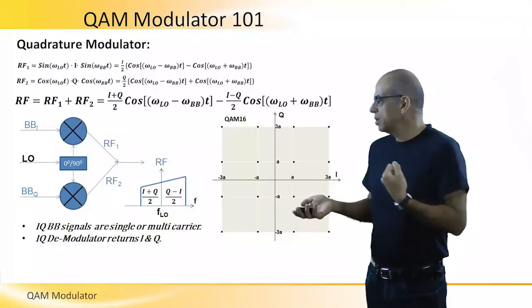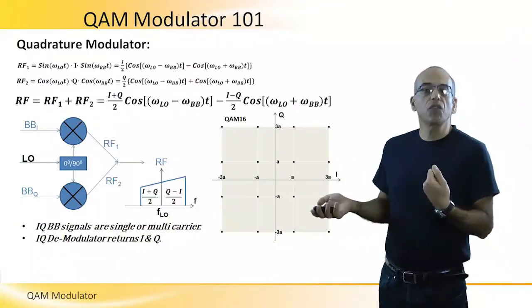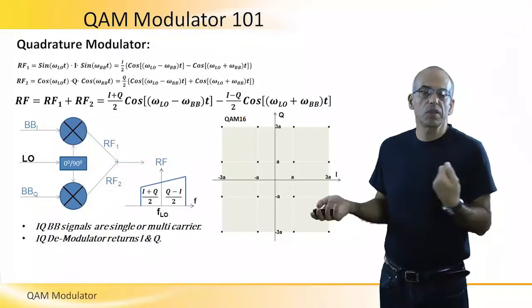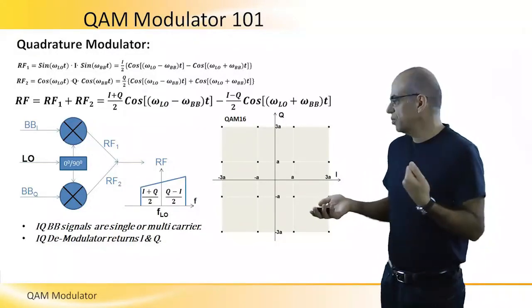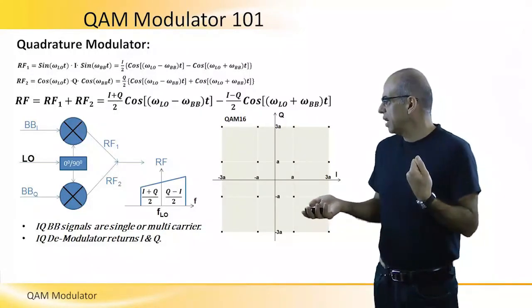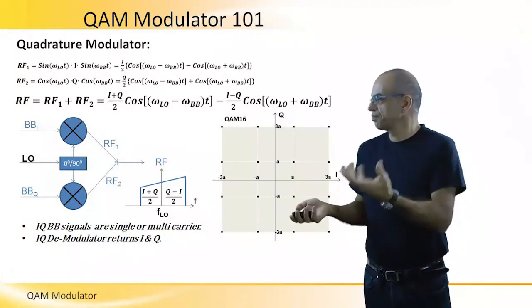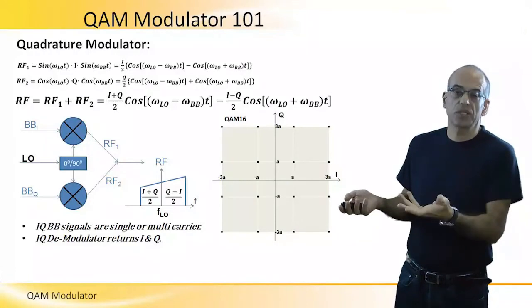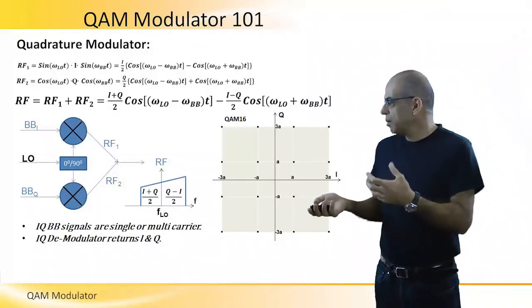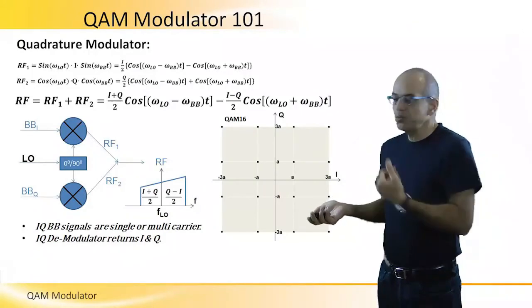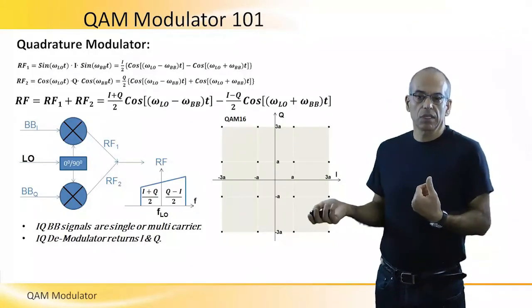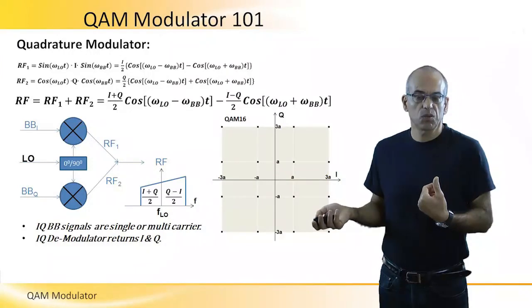We will get back the I and Q values that we have put in the modulator from the very beginning. By getting the I and Q baseband values, we should be able to recover the data that was transmitted.